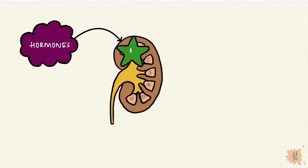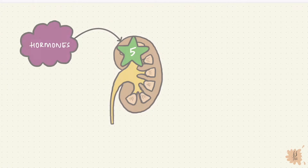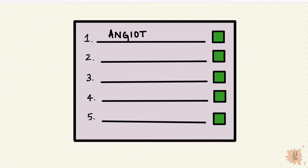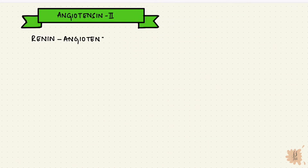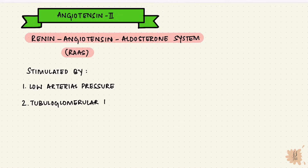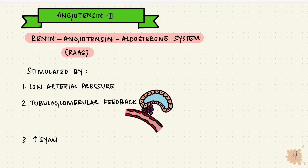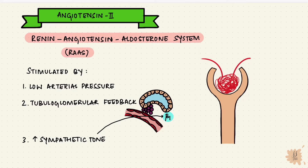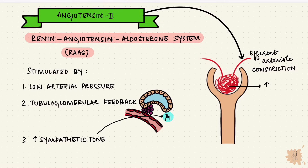We're going to talk about five important hormones. First up, angiotensin II as a part of the renin-angiotensin-aldosterone system. Angiotensin II is stimulated in response to low arterial pressure, as a part of tubuloglomerular feedback from the macula densa, or from increased sympathetic tone via the beta-1 receptors. Angiotensin II acts on the glomerulus, constricting the efferent arteriole, increasing the glomerular hydrostatic pressure and hence the GFR and the filtration fraction.